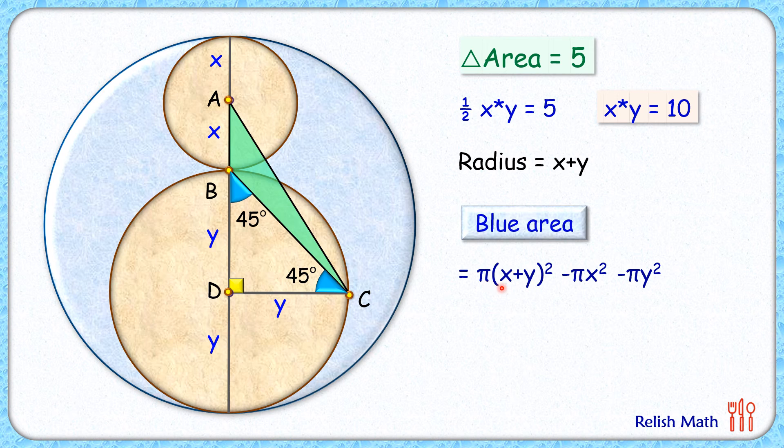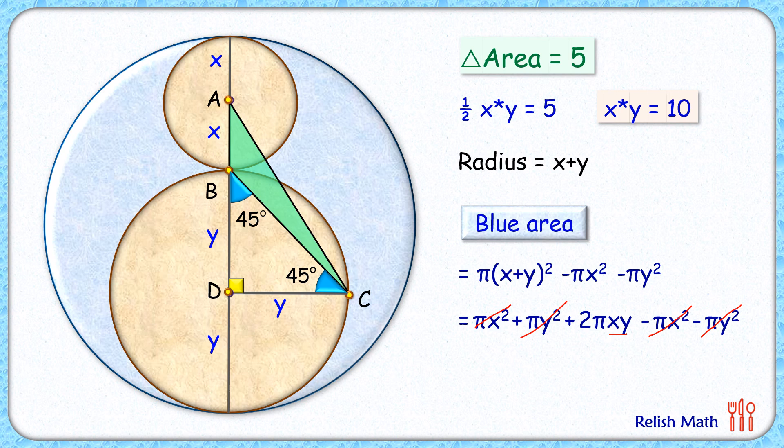Now here let's open the bracket of x plus y square. Now here the magic is this x square term is getting cancelled down, y square term is getting cancelled down, and we know the value of x times y, that is 10.